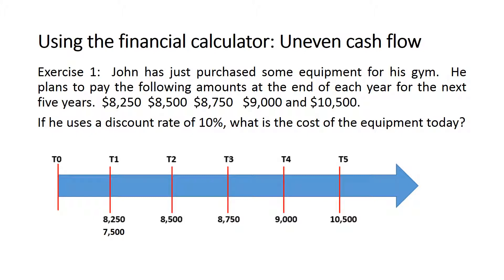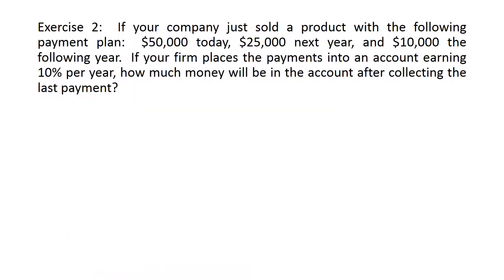The second payment is 8,500 — enter it as the future value, I = 10%, and N = 2 since it takes two periods to move from t2 to t0. Solving for PV gives 7,024.79. I do the same for the next payment and so on, write down each present value, then get the summation of all present values — the answer for this exercise is 33,765.58.